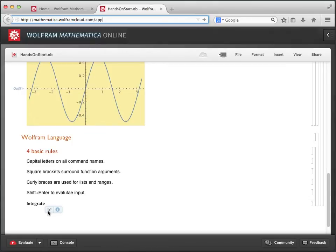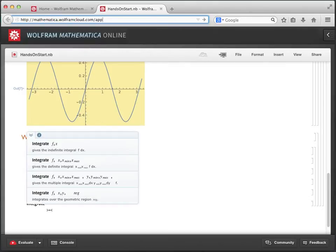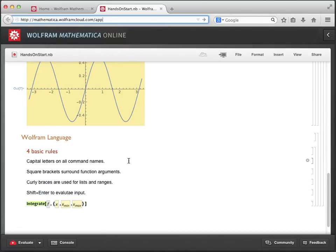Once we do that, we see a menu with double chevrons, and clicking that shows us the possible ways to enter this command, depending on what we want to do. Let's select the second one to calculate a definite integral, and that pastes in a template for us to fill in. For the function f, let's enter x squared by typing x, and then shift and 6 together to get the caret to raise x to the power of 2. And for the function variable, let's use x, and then integrate over the domain of negative 10 to 10.